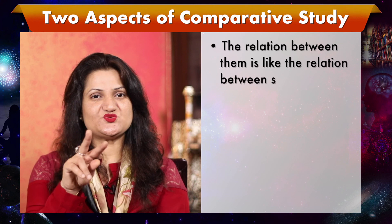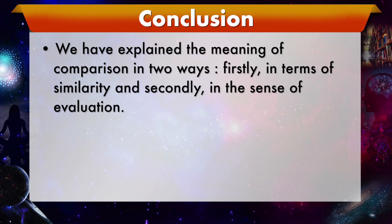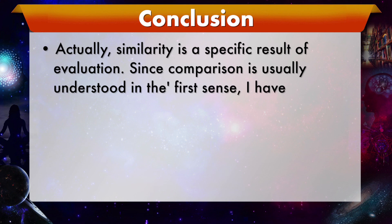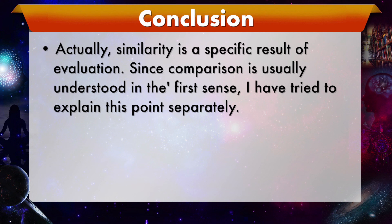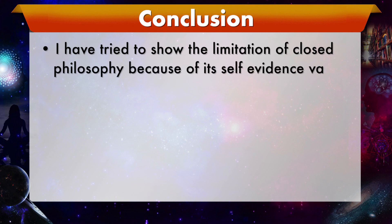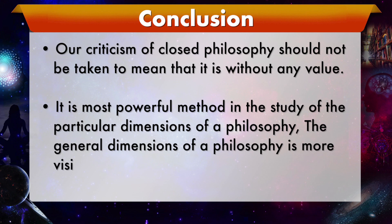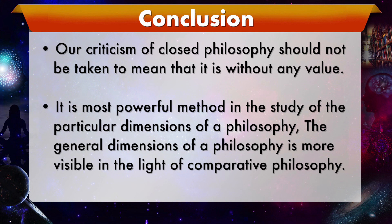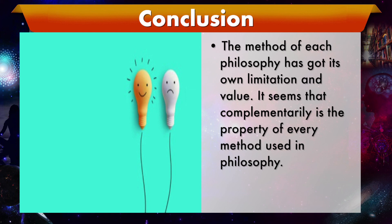The relation between presupposition and comparison is dialectical: comparison is not possible without presupposition, and genuine presupposition is not possible without comparison — the relation between them is like the relation between sleeping and awakening. Finally, it is concluded that we have explained the meaning of comparison in two ways: firstly in terms of similarity, and secondly in the sense of evaluation. Actually, similarity is a specific result of evaluation. I have tried to show the limitation of closed philosophy because of its self-evident validity in the present-day study of Indian philosophy. Our criticism of closed philosophy should not be taken to mean that it is without any value — it is a most powerful method in the study of the particular dimensions of a philosophy. The general dimensions of a philosophy are more visible in the light of comparative philosophy.